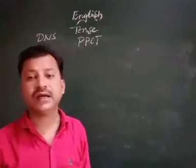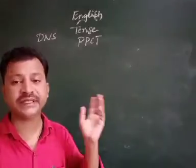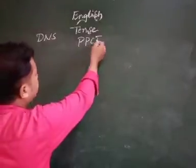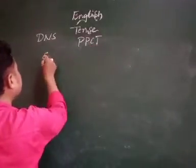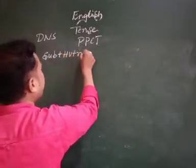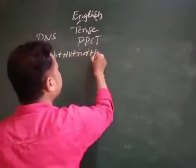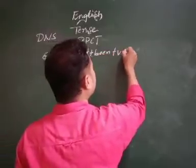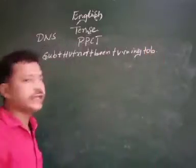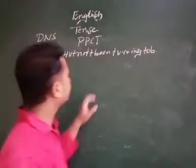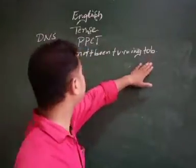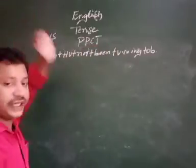These three concepts create present, past, and future meanings. First one: present perfect continuous tense in the DNS structure. The structure is: Subject + helping word + not + being + verb in -ing form + object. This is the structure of the present perfect continuous tense in the DNS.